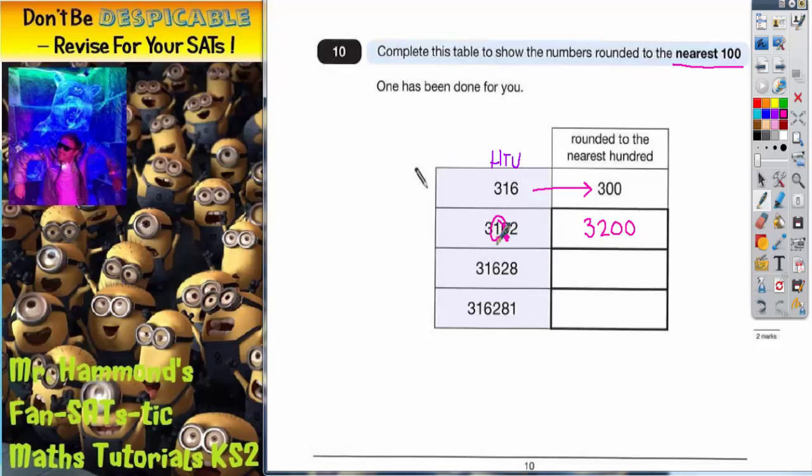I can also decide this because 162 is closer to 200 than 100, so that's why I've rounded up.